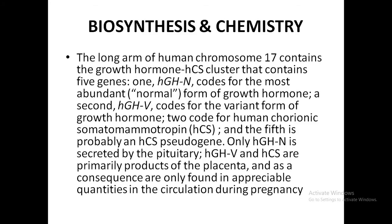Growth hormone: its biosynthesis and chemistry. On the long arm of human chromosome 17, there is the growth hormone-HCS cluster containing five genes. The HGHN gene codes for most of the growth hormone; the other genes are less important. The HGHV and HCS are primary products of the placenta and are found in appreciable quantities during pregnancy.